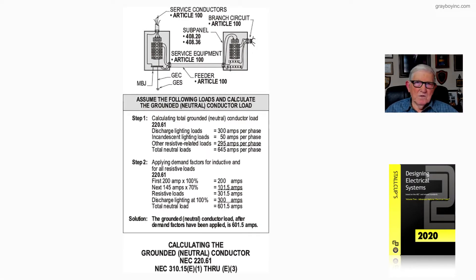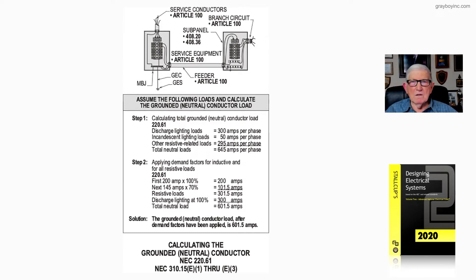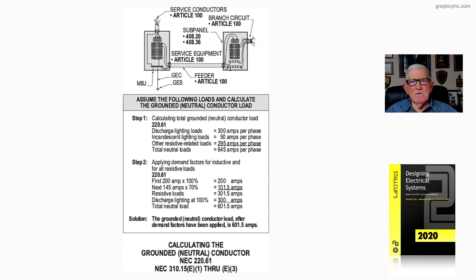Now let's take a look at figure 23-21. We're dealing with calculating the grounded neutral conductor in accordance with 220.61. Before we get into the calculation, let's take a look at the service conductors defined in Article 100, but all the requirements for the service conductors are in Article 230.